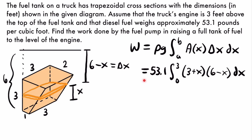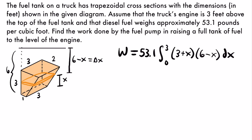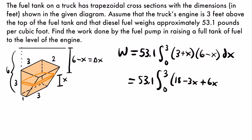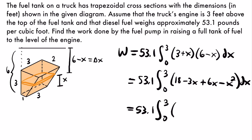To evaluate the integral, first multiply the two quantities (3 + x)(6 − x) to expand the integrand. This gives 3 × 6 = 18, plus 3 × (−x) = −3x, plus x × 6 = 6x, plus x × (−x) = −x². Combining like terms, −3x + 6x = 3x, so the integrand becomes 18 + 3x − x². The integral is 53.1 times the integral from 0 to 3 of (18 + 3x − x²) dx.